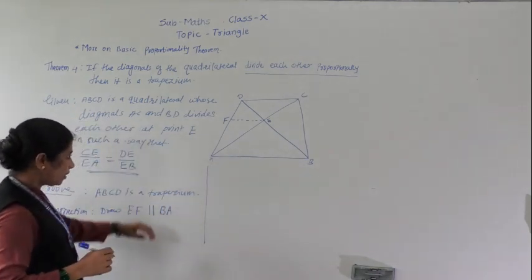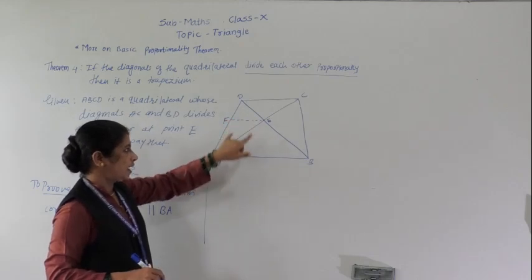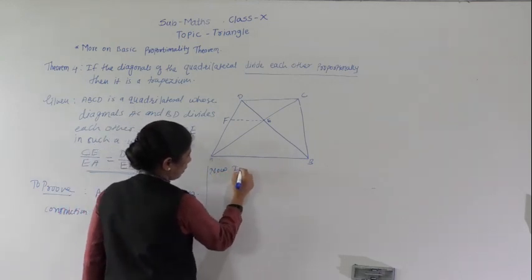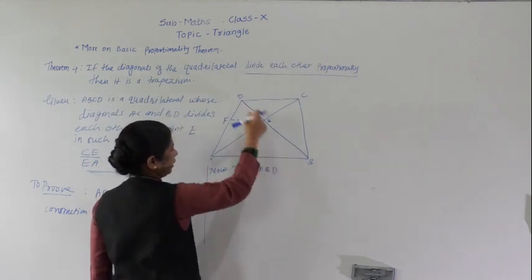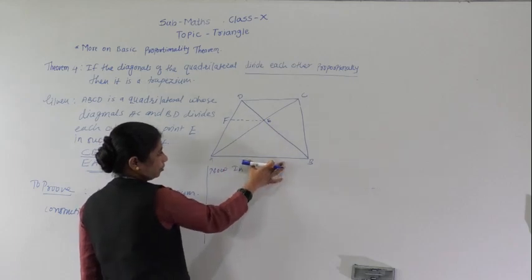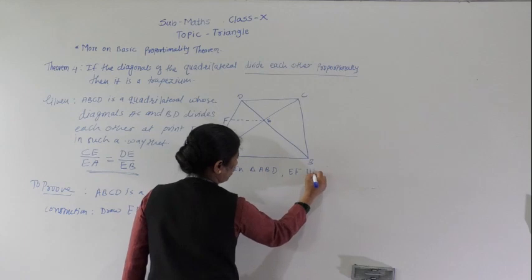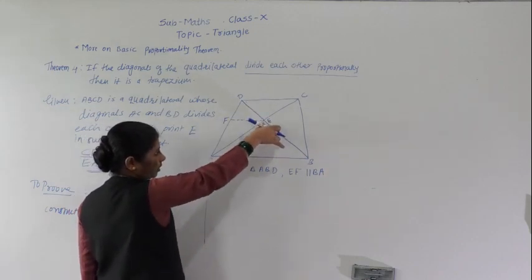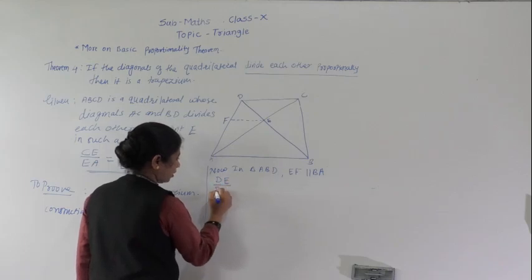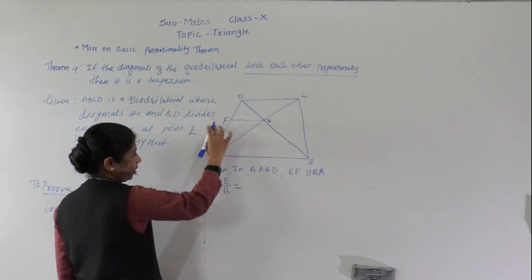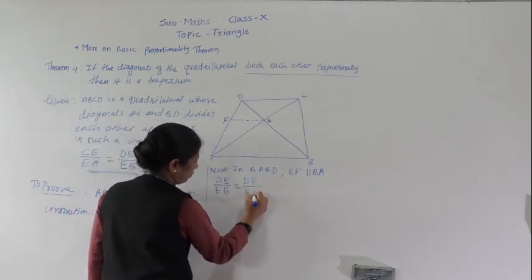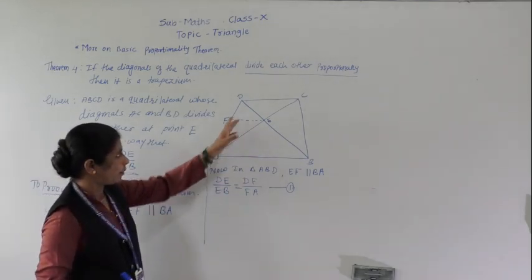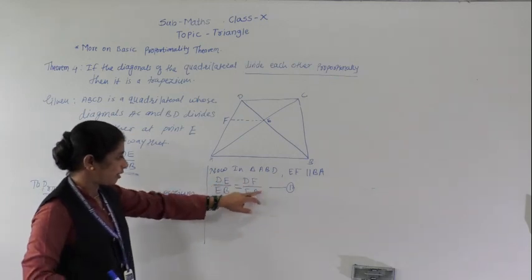First we take triangle ABD. In triangle ABD, EF is parallel to BA. So according to the Basic Proportionality Theorem (BPT), by BPT: DE/EB = BF/FA. This is our first statement.